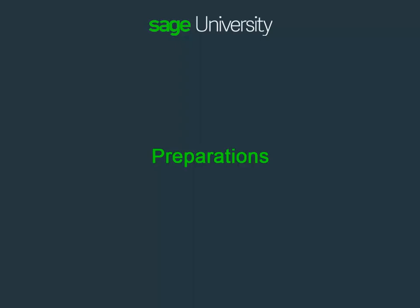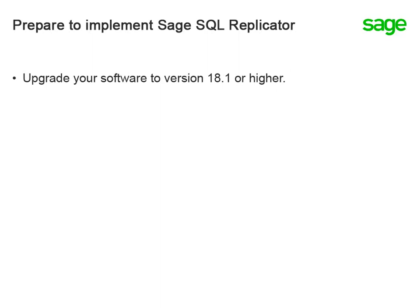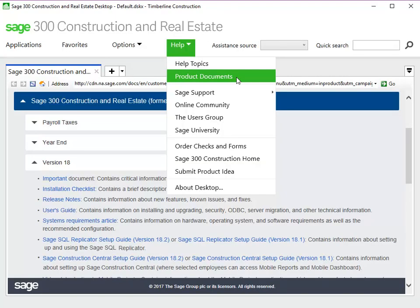Next, let's examine how to prepare for implementing Sage SQL Replicator. First, you'll need to upgrade your software to version 18.1 or higher. This lesson is based on version 18.2. And as with any upgrade, you should review the release documents beforehand. The easiest way to get to these documents is through your Sage desktop. Go to Help, Product Documents.